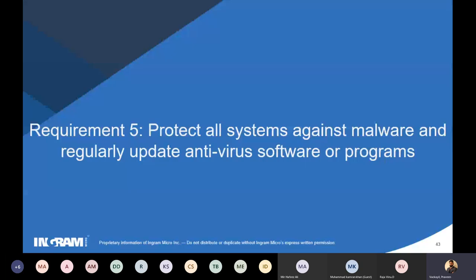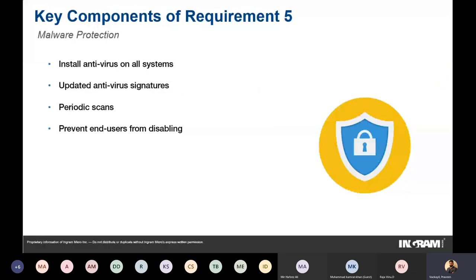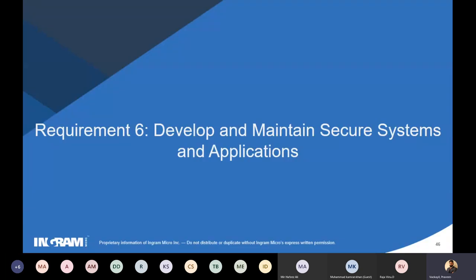Requirement 5 is the antivirus or malware requirement. Protect all systems against malware by installing antivirus on all systems, keeping antivirus signatures updated, performing periodic automatic scans at least daily, and preventing end users from disabling the antivirus. This is a relatively short, straightforward requirement. So far we have covered requirements for building secure networks (Req 1), secure device configuration (Req 2), protection of stored cardholder data (Req 3), protection of transmitted cardholder data (Req 4), and antivirus (Req 5).